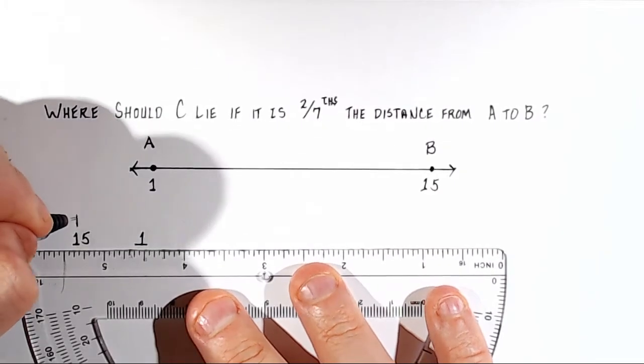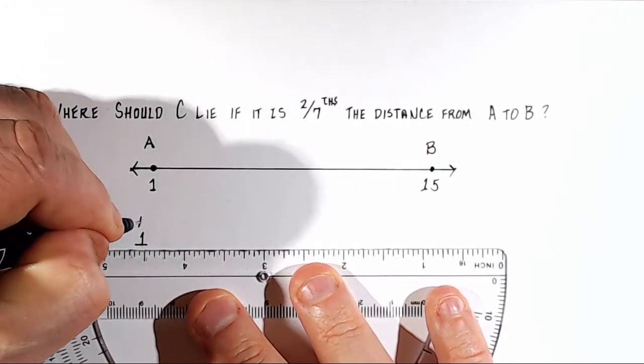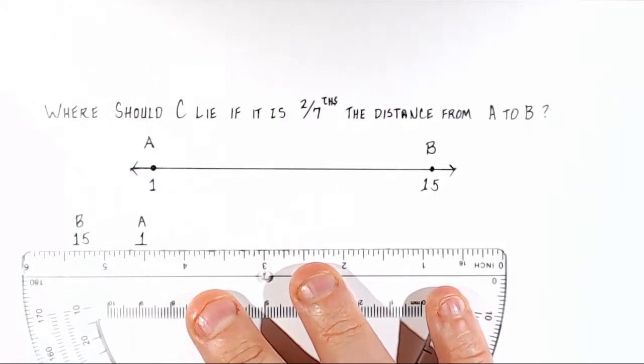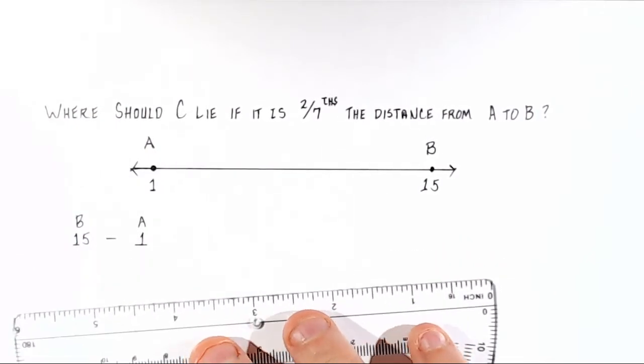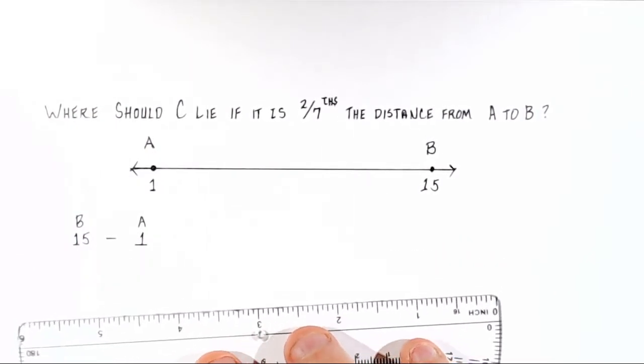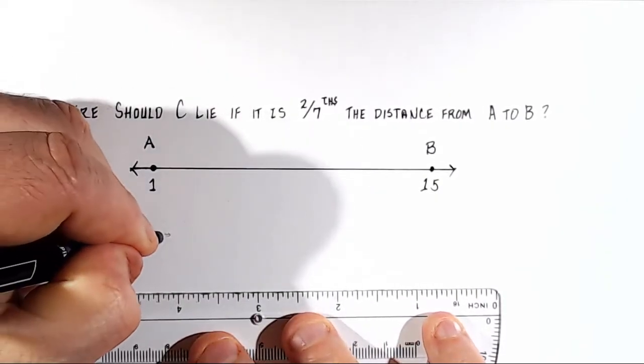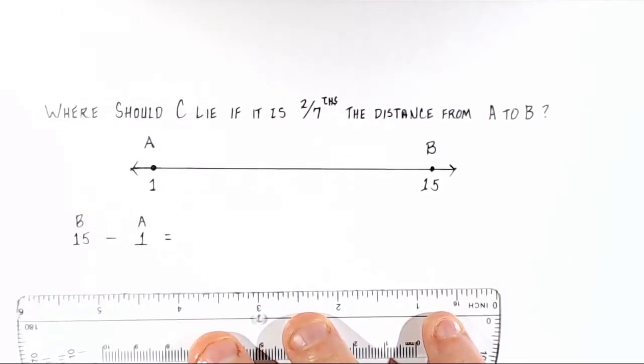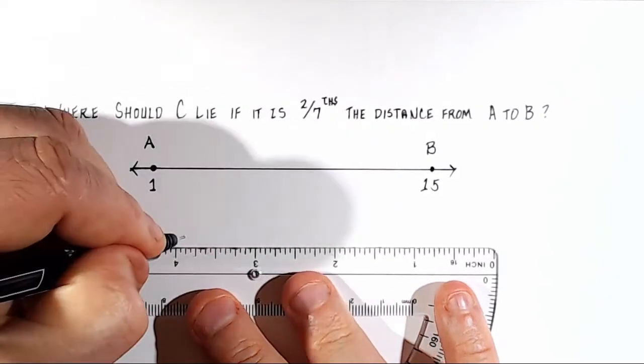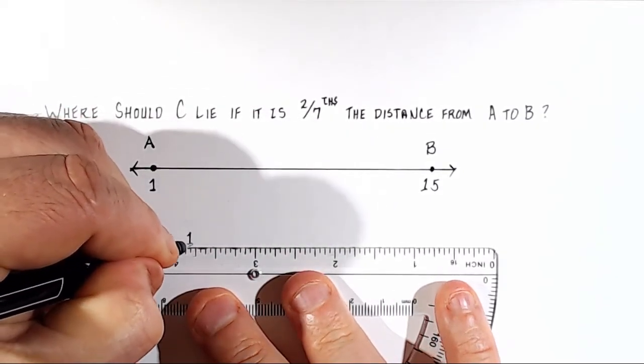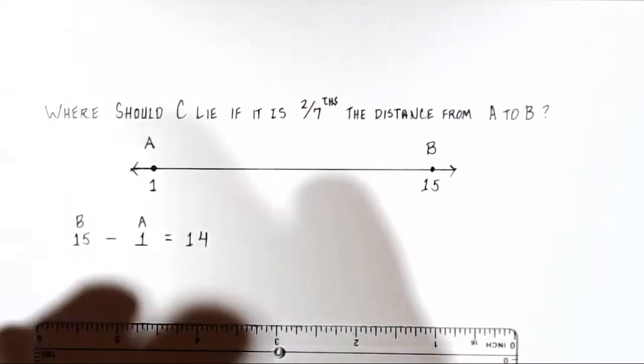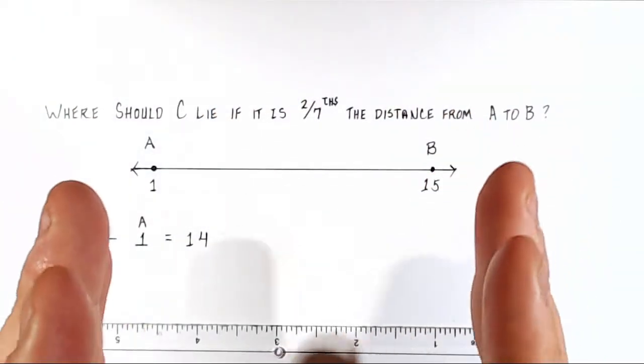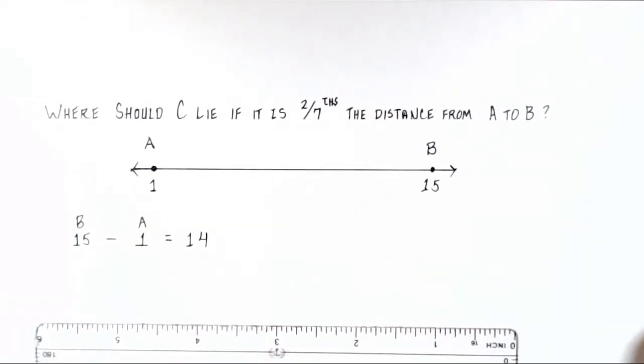We'll label these points here. This is point B, and this is point A. The way you find the absolute difference between these two points is by subtracting A from B. So what is 15 minus 1? It's not a trick question. The answer is 14. So that 14 is the absolute difference between A and B.